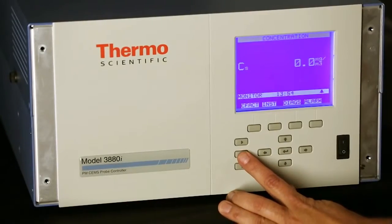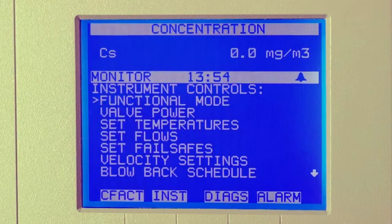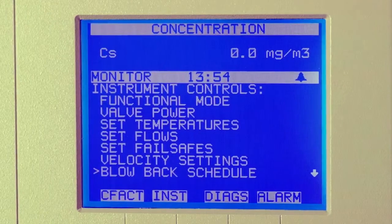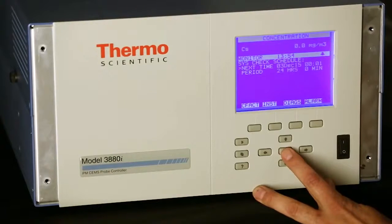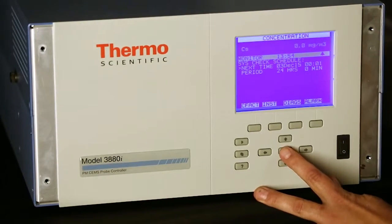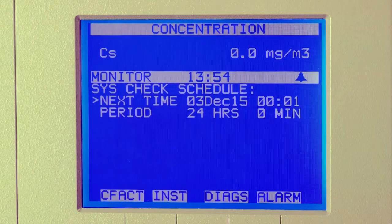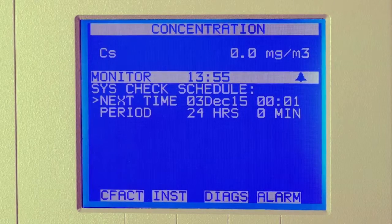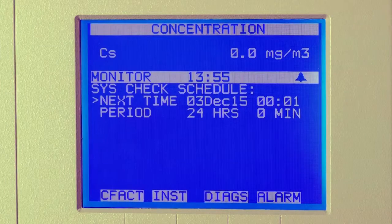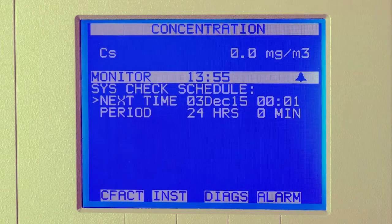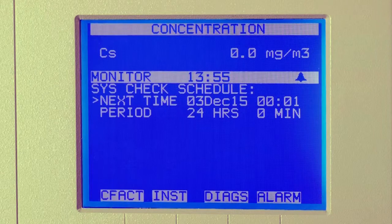To schedule an event, go to the menu, then controls, then to system check schedule. Hit enter. The schedule should be put on a 24-hour period to start at 00:01 every day. As you can see, this instrument is already set up for the next cycle. The optimum time to do the system check is during low load during the night. The system check is just a zero check to verify you have the correct set points.